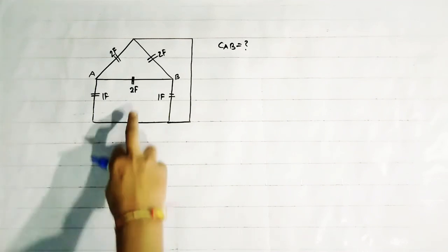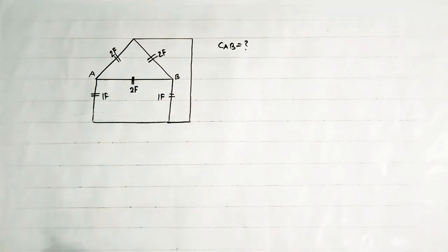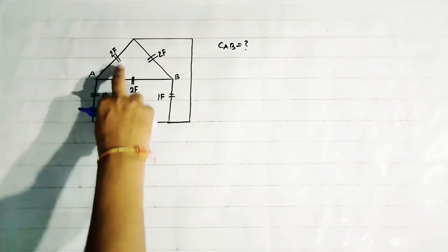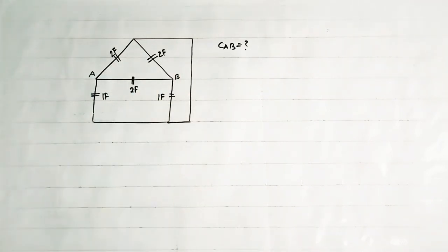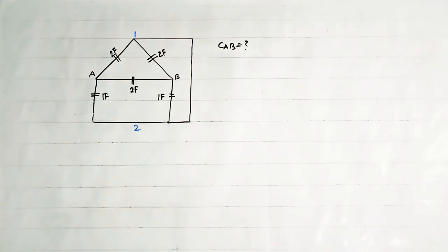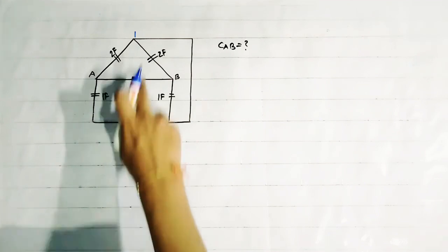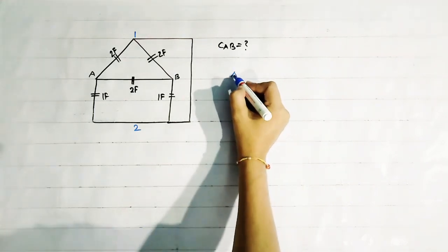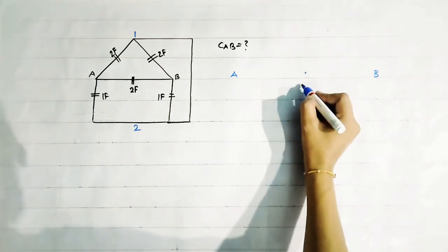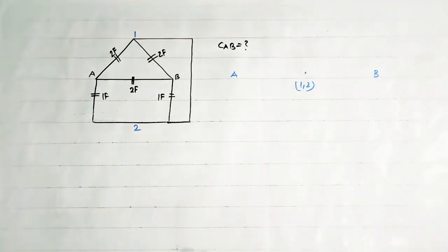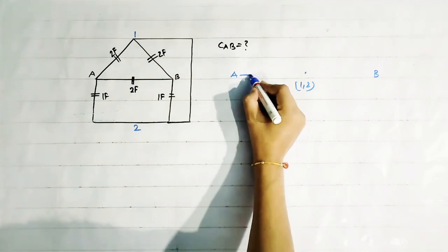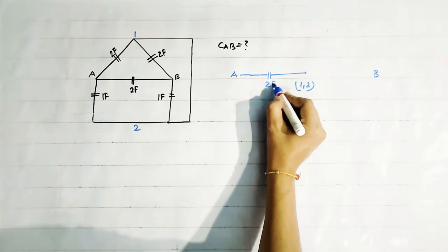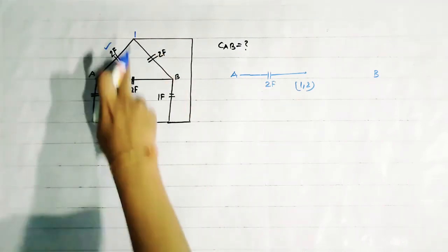Now see this question. In this question a circuit is given and we have to find the capacitance between A and B — these are all capacitors. This one is 2 Farad and this is 1 Farad. Suppose this is point 1 and this is point 2. Since points 1 and 2 are directly connected, they are at a common potential. So we draw the circuit as: point A, point B, and points 1 and 2 combined since they are at the same potential. Between A and 1, this 2 Farad is connected, and this 2 Farad is connected between 1 and B.